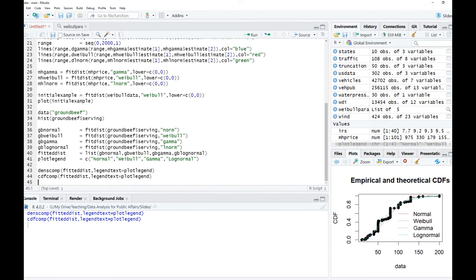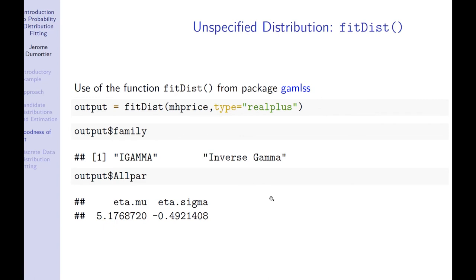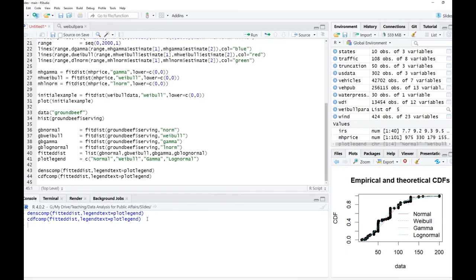Now let us move on to the situation where we do not have any idea about the possible distribution that would fit our data. Here we are going to use the function fitDist — note that this fitDist is different from what we used before, because the D is capitalized. The function fitDist is from the package GAMLSS, and basically what it does is look at many possible distributions and tell you which seems the most appropriate distribution for your data.